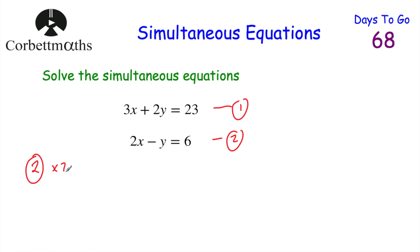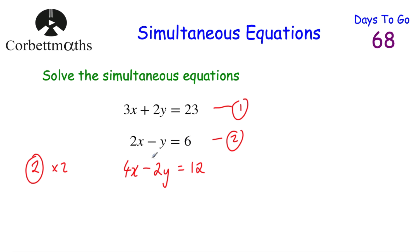So I'm going to multiply equation 2 by 2 — I'm going to double this equation. So multiplying everything by 2: 2x times 2 equals 4x, minus y times 2 gives minus 2y, and 6 times 2 gives 12. So doubling the bottom equation gives us 4x minus 2y equals 12.